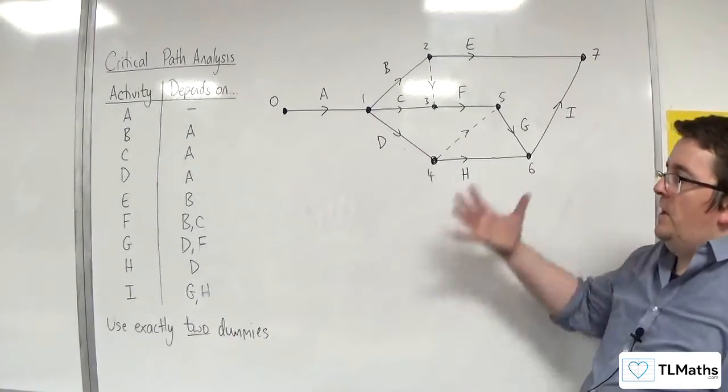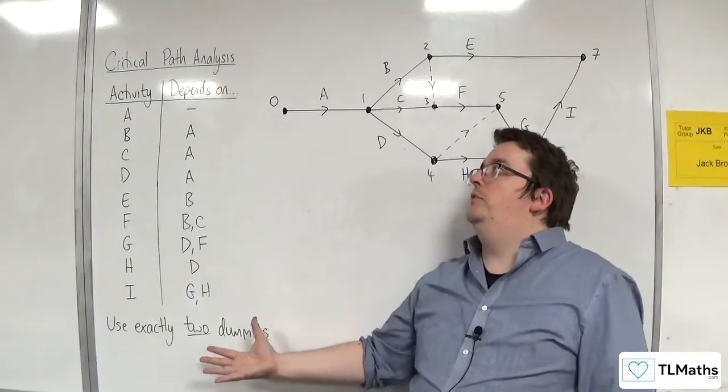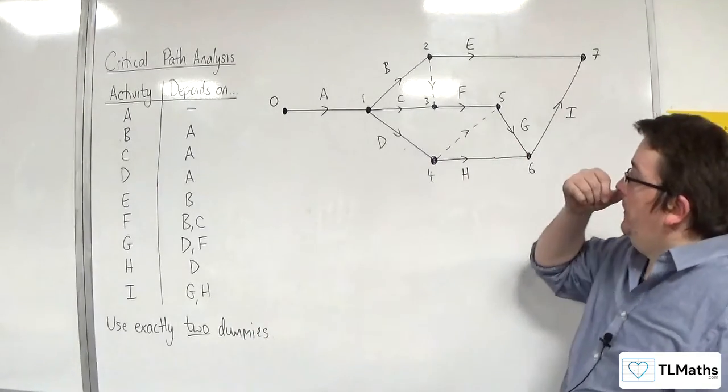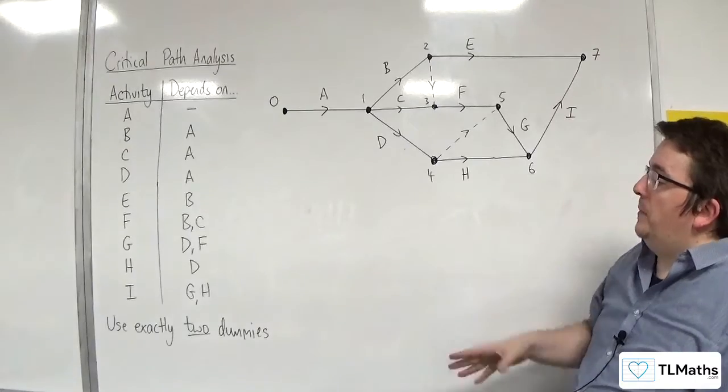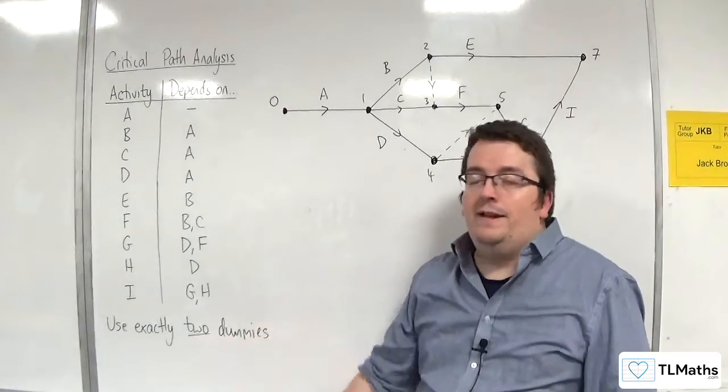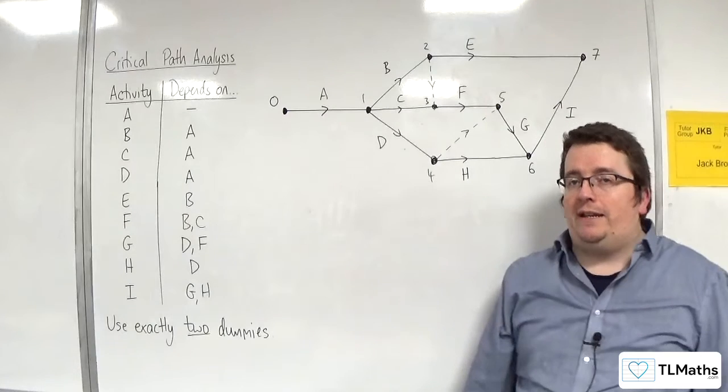Okay. So, it requires a little bit of a learning curve building up an activity network from precedence table and including the dummies. But always make sure you read the question because it might identify how many dummies you actually need to use.